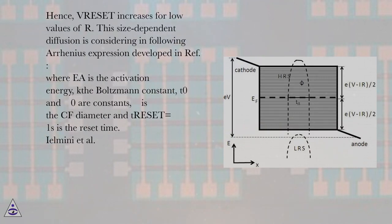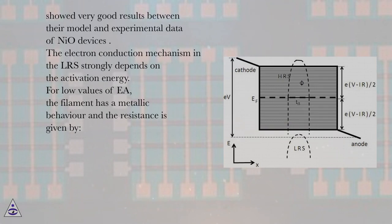Hence, VRESET increases for low values of R. This size-dependent diffusion is considering in the following Arrhenius expression developed in reference, where EA is the activation energy, K Boltzmann constant, T0 and Phi0 are constants, Phi is the CF diameter and T reset equals 1 second is the reset time. Ilmini et al. showed very good results between their model and experimental data of NIO devices.